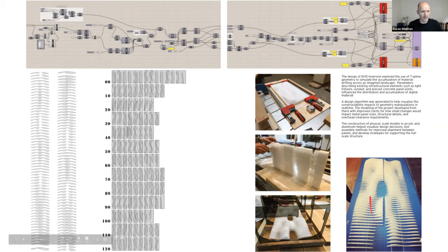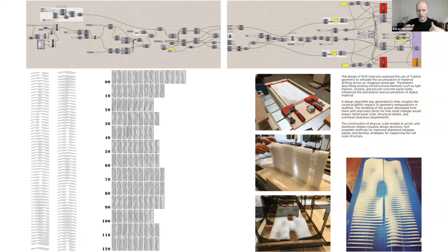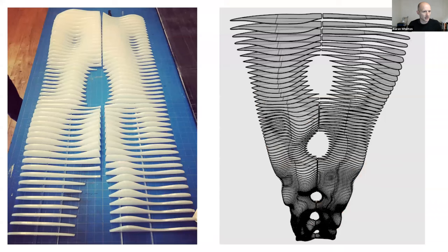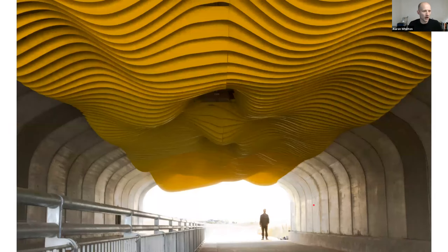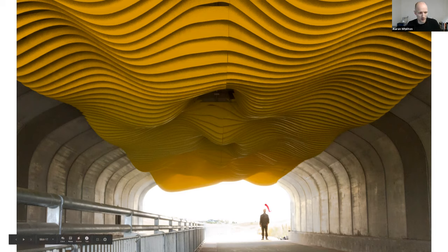You'll notice there are these little open areas — those are registering existing lights. Those became a component that was not an attractor but a kind of repellent force in the creation of the algorithm, to move the pattern away from those light sources. You can see where the lights were distributed and we had to stay away from those. The end result is made out of aluminum and hung from the ceiling. That's actually David, my collaborator the artist, as the scale figure there for that photo.